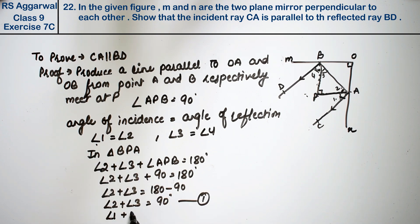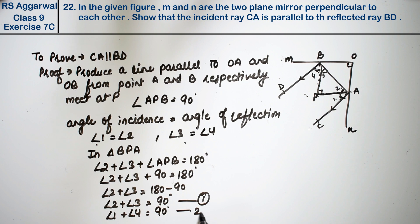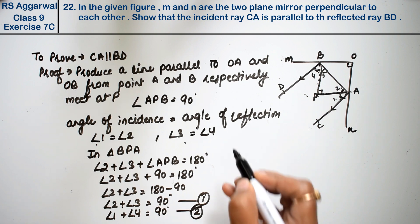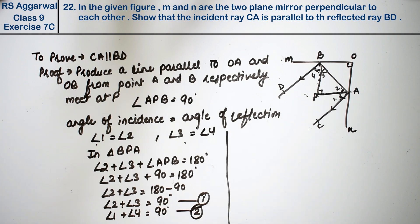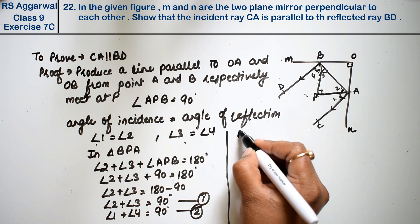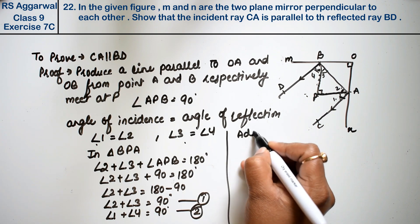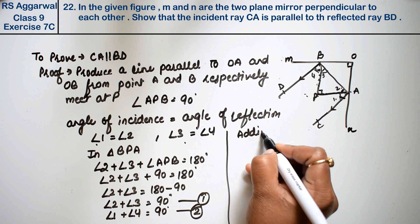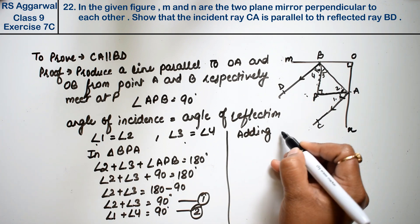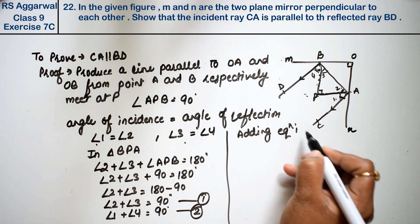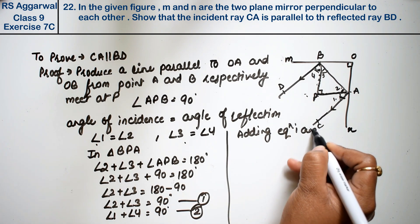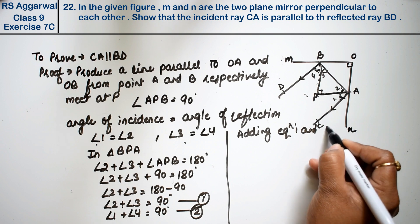Angle 2 was equal to angle 1, and angle 3 was equal to angle 4. So substituting, angle 1 plus angle 4 equals 90 degrees. This is our second equation. Now we add equation one and equation two together.